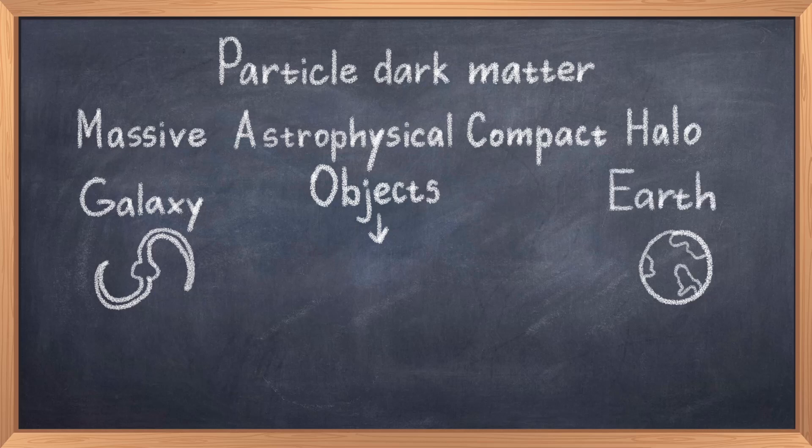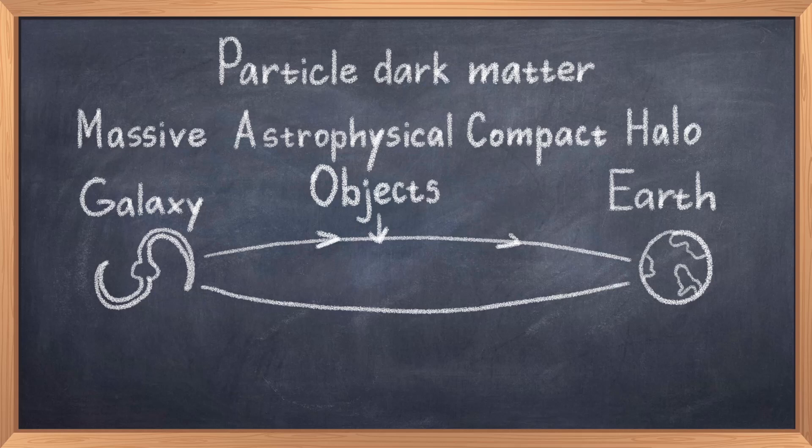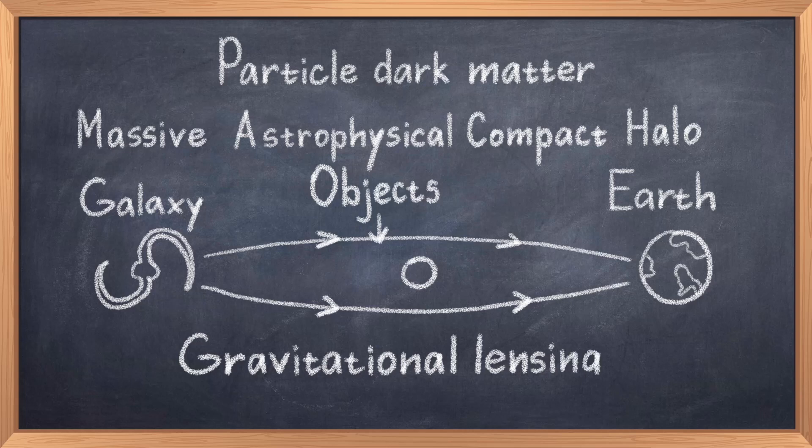Because they are dark you can't see them directly, but because they are massive heavy objects, you can see how light bends in space. This is called gravitational lensing. The problem is that while we can find some MACHO-like objects, for example black holes, we would expect a lot more if they were to be the source of dark matter. This solution therefore does not seem to work.